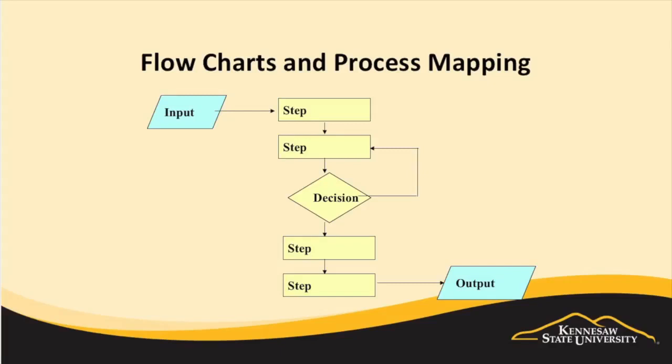One of the basic and primary tools for process improvement is a process map, also called a flow chart. A process map is often the starting point for improvement efforts. They can be used to demonstrate actions or procedures.